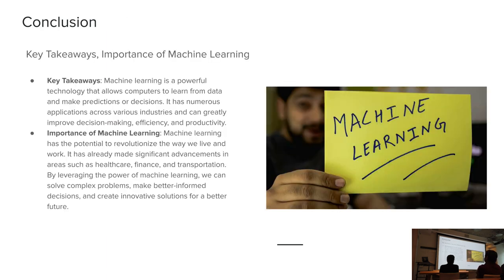And really your key takeaways here is that machine learning is definitely a powerful technology that allows computers to learn from data and make predictions. It definitely has a lot of use cases and is very important for revolutionizing the way that we live. And I think that's it. Is that it for this one? That's it, it's not going anymore. There we go.